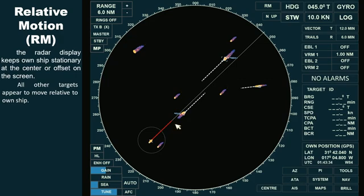For the vessel ahead, which has the same course and speed as our ship, setting the radar to relative motion with the trail set to relative will cause that ship to appear stationary on the radar display. As a result, it won't show any trail because there's no relative movement between the two ships. Since both vessels are moving at the same speed and direction, they maintain a constant position relative to each other.